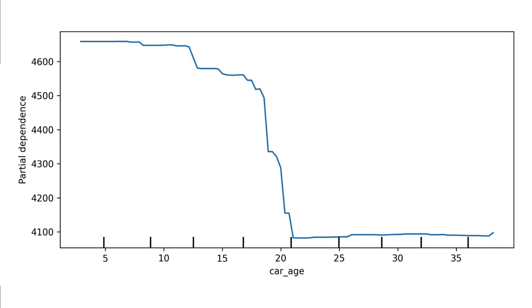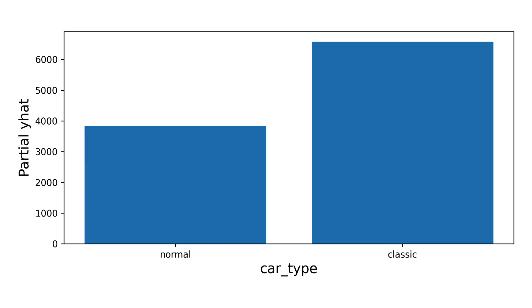First, we have the PDP for car age, which gives the average predicted price of a second-hand car as the car's age increases. We can see that, in general, price decreases with age. We also have the PDP for car type — this feature had two classes, either classic or normal. Classic cars tend to have a higher price on average. Both relationships for car age and car type are intuitive.